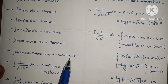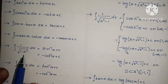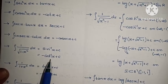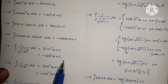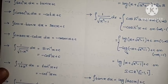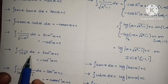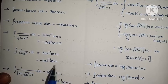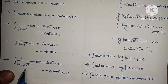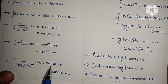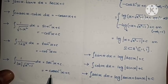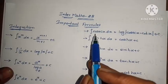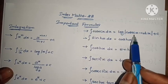Integral of cosec² x dx equals minus cot x plus c. Integral of sec x tan x dx equals sec x plus c. Integral of cosec x cot x dx equals minus cosec x plus c. Integral of 1 by root of 1 minus x² dx equals sin inverse x plus c, or alternatively minus cos inverse x plus c. Integral of 1 by 1 plus x² dx equals tan inverse x plus c, or minus cot inverse x plus c. Integral of 1 by mod x into root of x²-1 dx equals sec inverse x plus c, or minus cosec inverse x plus c.